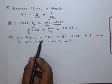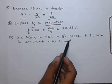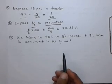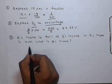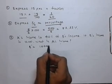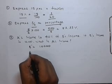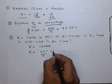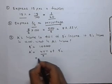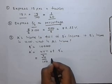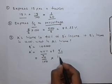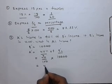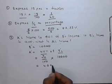The next problem is a simple application of percent. If A's income is 40% of B's income, and B's income is 10,000, then what will be the income of A? A's income is 40% of 10,000, which gives us A's income as 4,000.